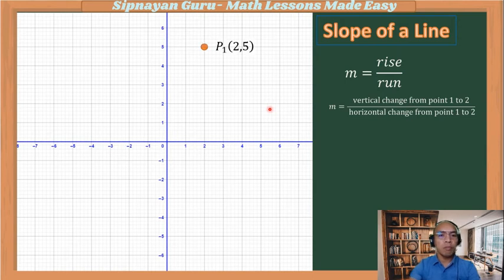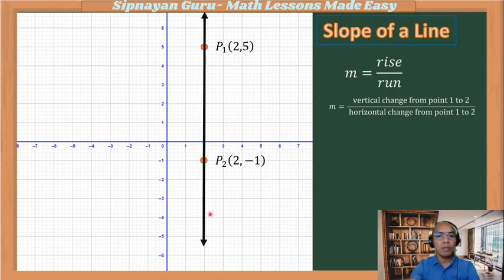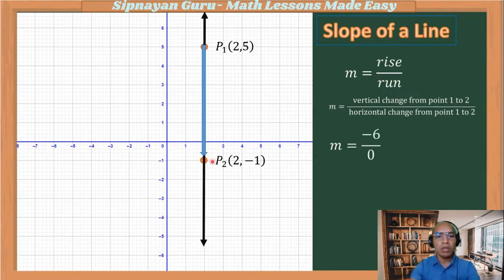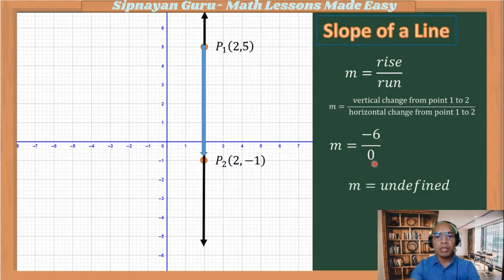What if point one is (2, 5) and point two is (2, −1)? Connecting them, using point one as the reference, we go down 1, 2, 3, 4, 5, 6 units. There is no horizontal change, so the horizontal distance is zero. Any number divided by zero is undefined. The same is true if point two is used as the reference. So the slope of this vertical line is undefined.